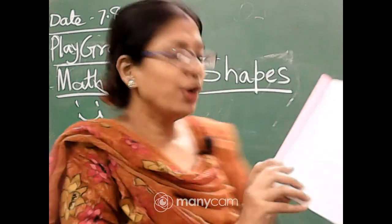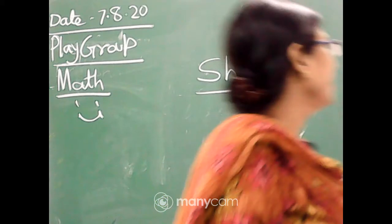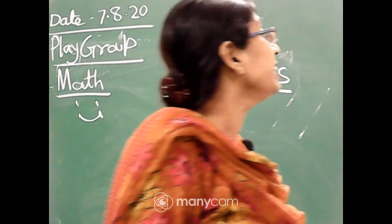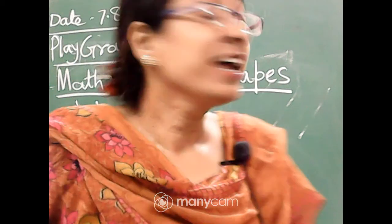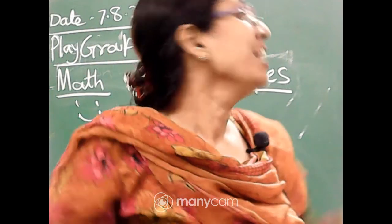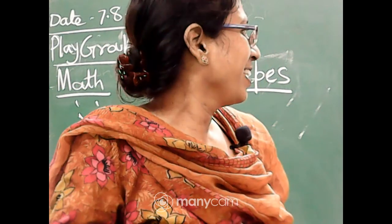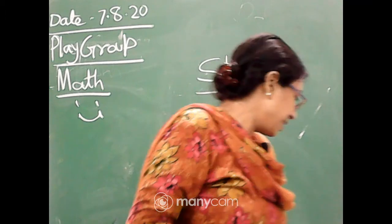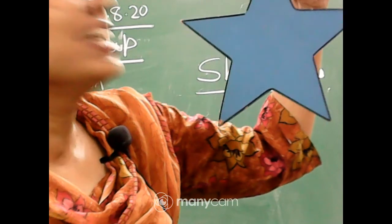Now, tell me, what is this? This is a star. You see — where do you see this star? Show me — in the sky, in the sky. But look, this is star. This shape is called star.